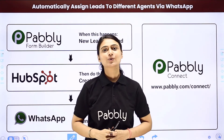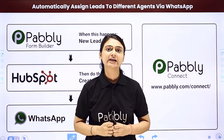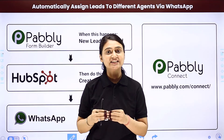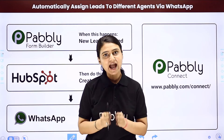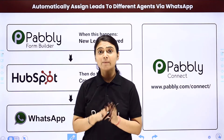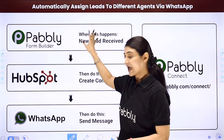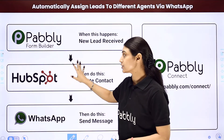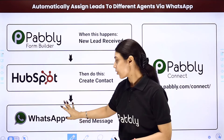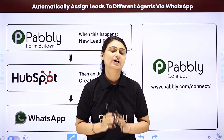Now let's say you run a business and you are receiving several leads every day. Suppose you have three agents or sales representatives, and you want to distribute these leads evenly among them so that action can be taken on time. Manually collecting lead details from your form builder application and adding them as a contact in your CRM software, then sending the leads via WhatsApp to your sales representatives, can be a time-consuming process.